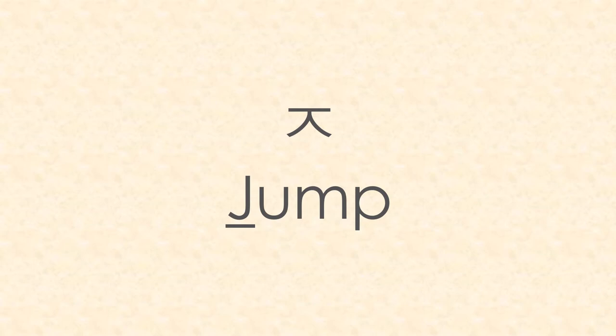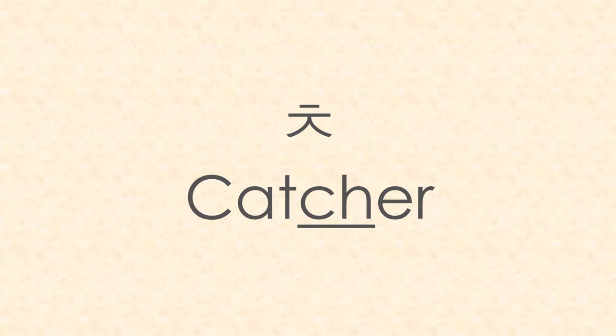Here we have J for jump — it looks like a person jumping up in the air, so remember J for jump and it makes the J sound. And here we have the CH sound for catcher. If you look closely it almost looks like a backcatcher in a baseball game with a mask on. That's how to remember CH is for catcher — CH sound.